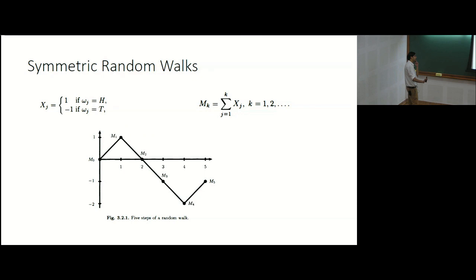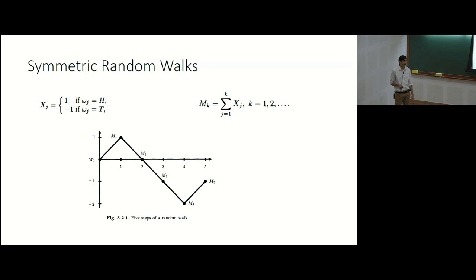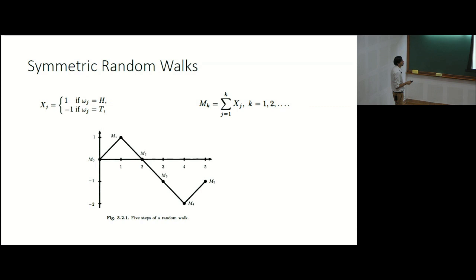We start building Brownian motion from the symmetric random walk. At each time point, you toss a coin: if heads, Xj = +1; if tails, Xj = −1. You define a process M as the cumulative sum of all Xj values, starting at M0 = 0. For example, head gives M1 = 1; a subsequent tail gives M2 = 0; another tail gives M3 = −1. This is a symmetric random walk.